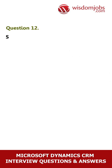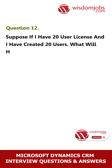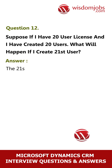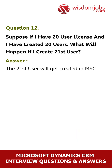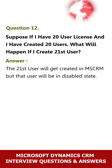Question 12: Suppose I have 20 user licenses and I have created 20 users. What will happen if I create a 21st user? Answer: The 21st user will get created in MSCRM, but that user will be in a disabled state.